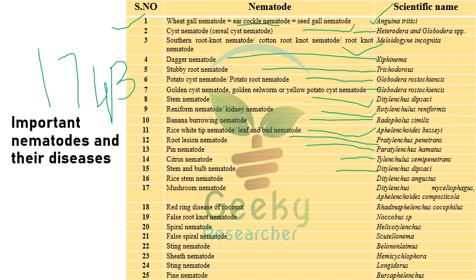Stem and bulb nematode is Ditylenchus dipsaci. Rice stem nematode is Ditylenchus angustus. Mushroom nematode is Ditylenchus myceliophagus and Aphelenchoides composticola. Red ring nematode of coconut and false root nematode — the red ring disease of coconut is caused by Rhadinaphelenchus cocophilus. False root nematode is Nacobbus species. Spiral nematode is Helicotylenchus. False spiral nematode is Scutellonema. Sting nematode is Belonolaimus. Sheath nematode is Hemicycliophora. Needle nematode is Longidorus. Pin nematode is Paratylenchus — these are some important nematodes and their scientific names.